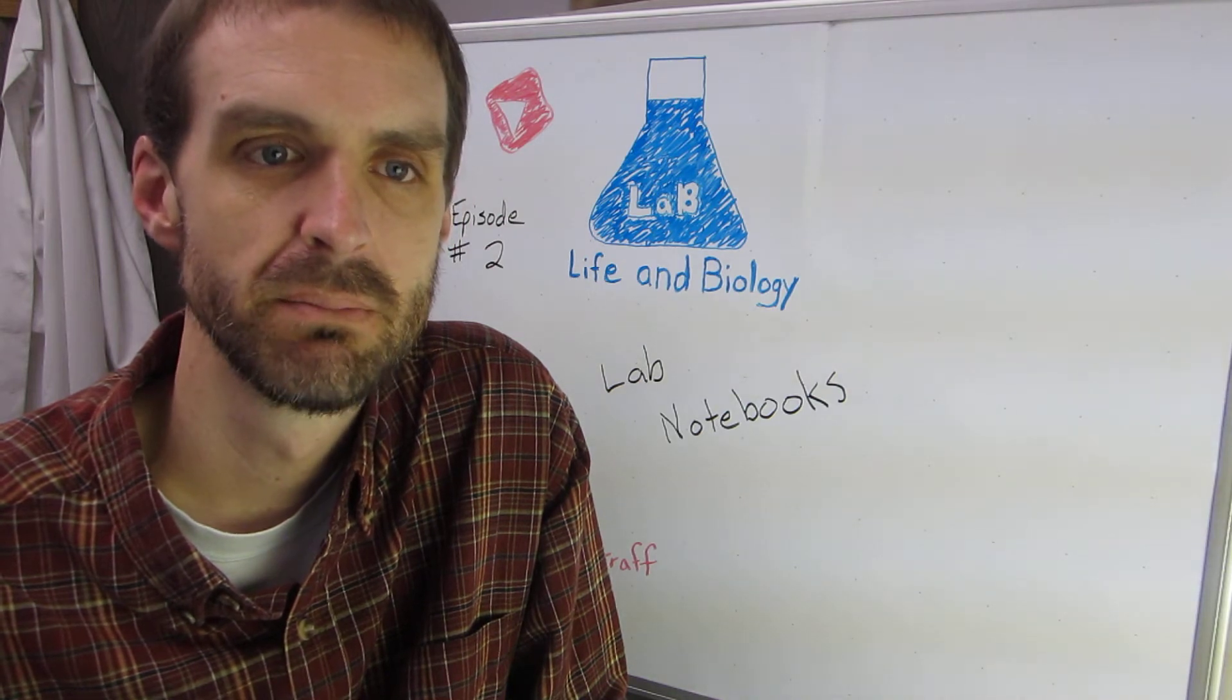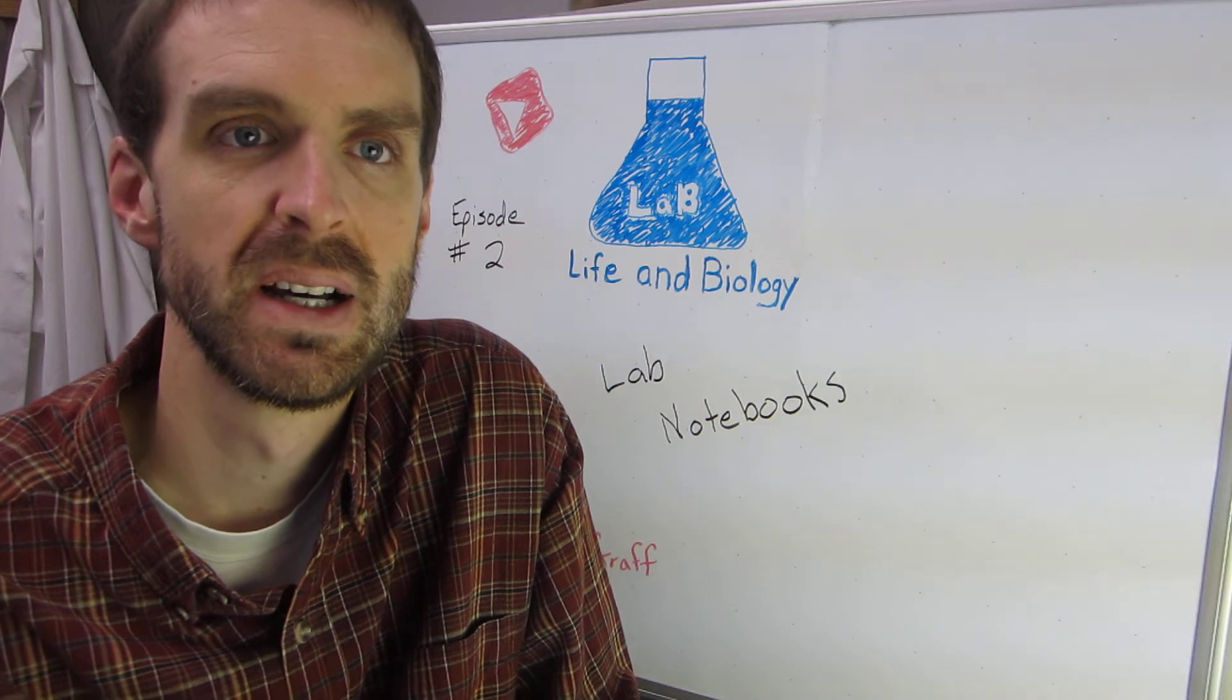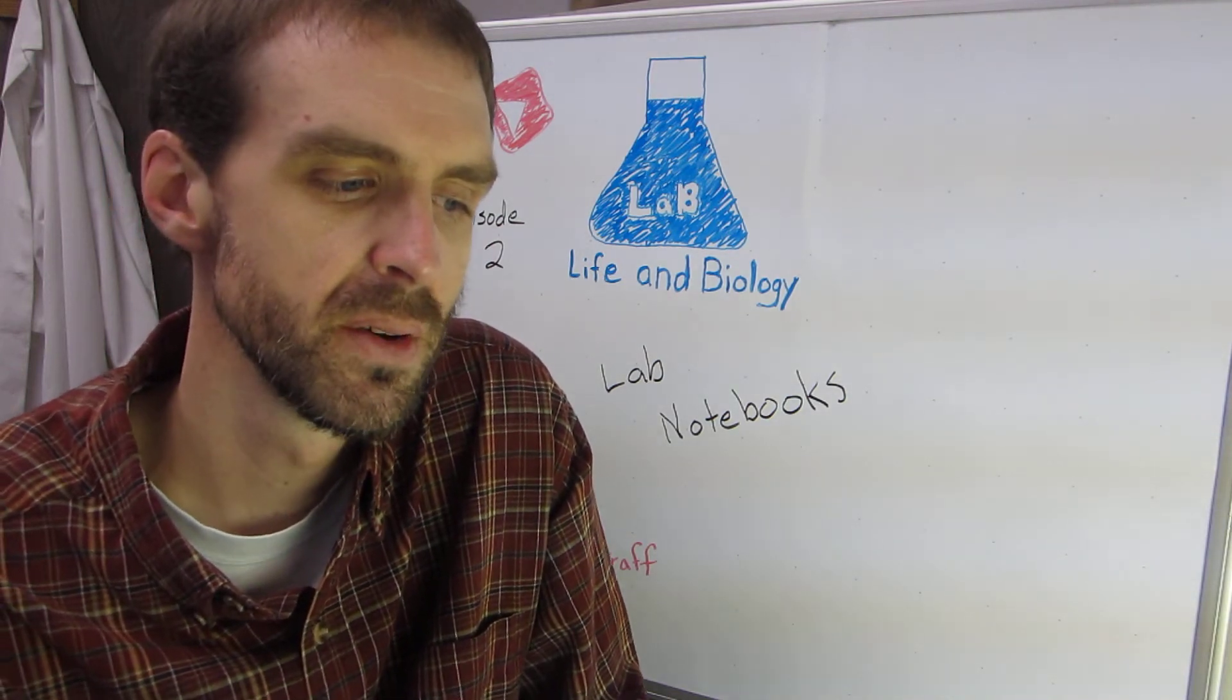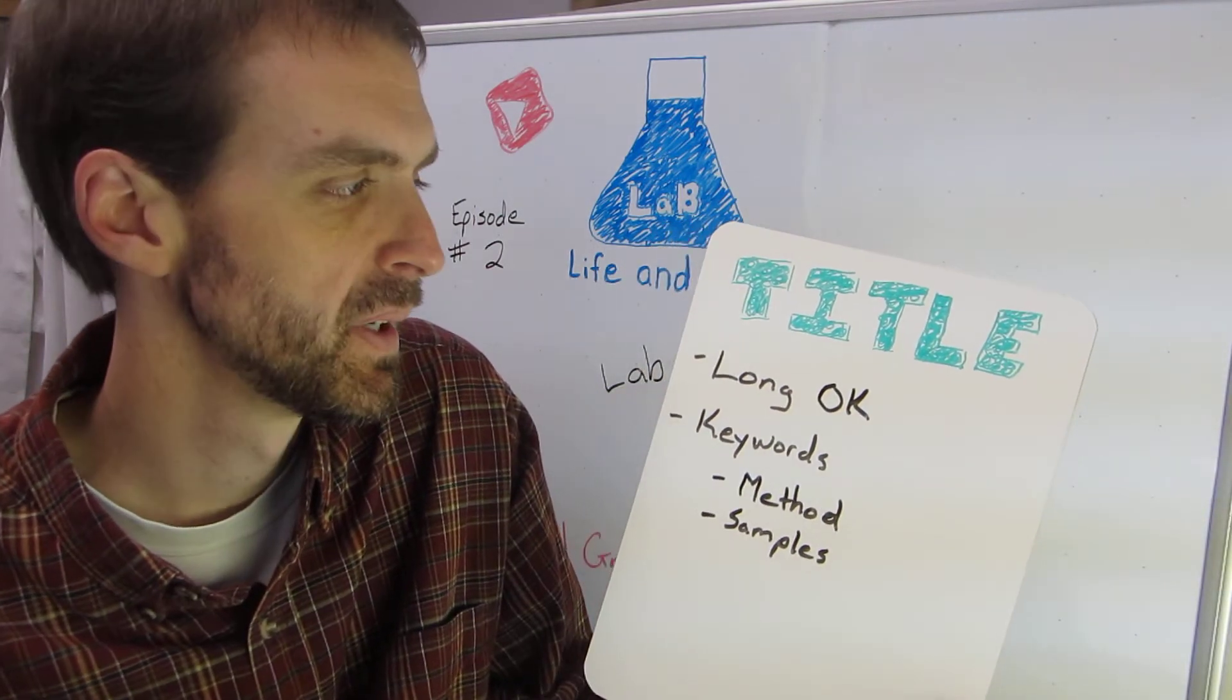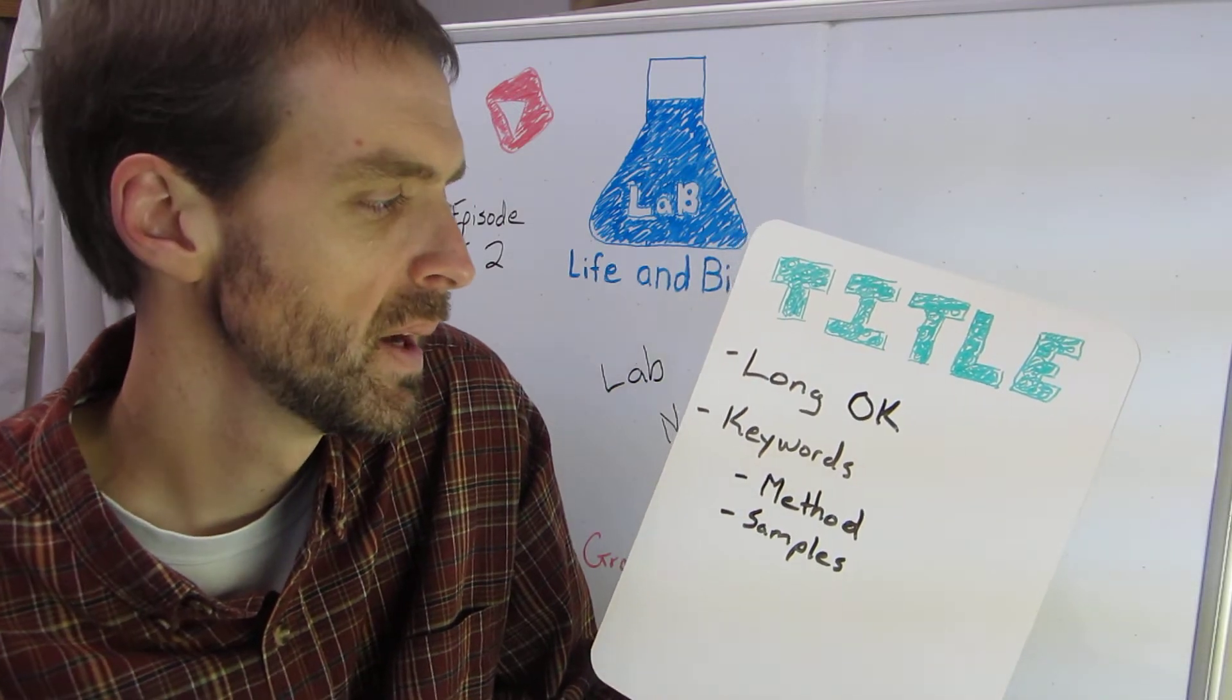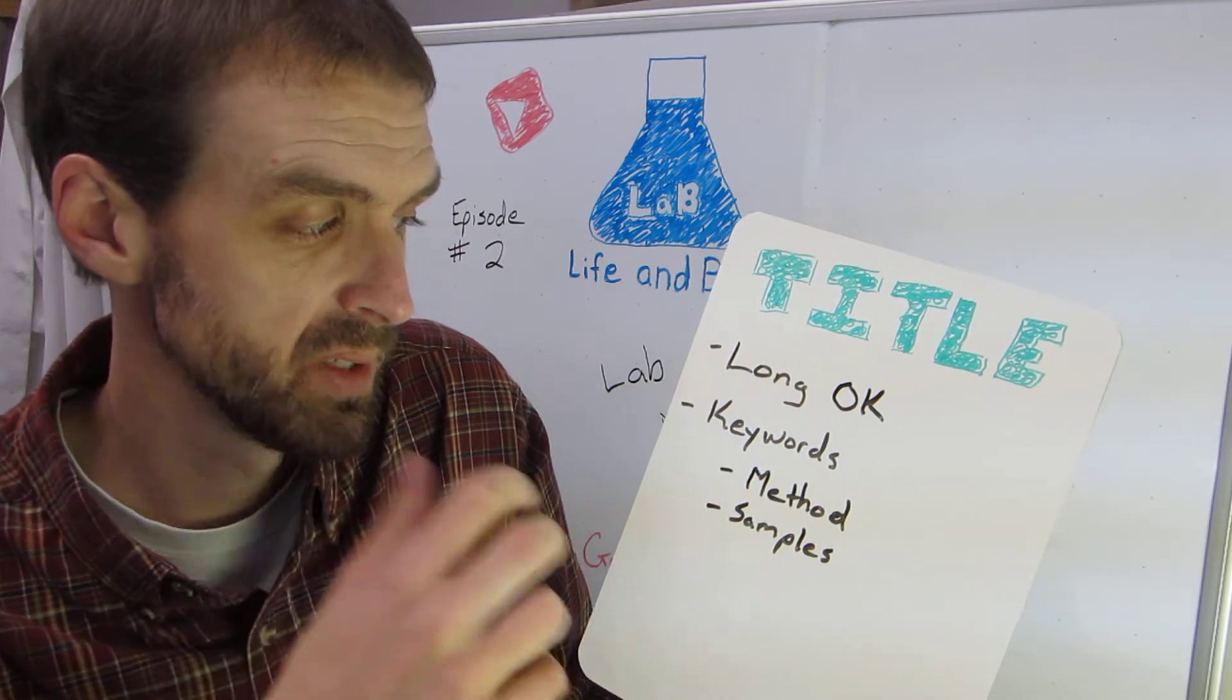So I want to talk about good lab book practices. In a lab book, you write an entry for each experiment that you do. So for each experiment, there's obviously going to be a title for that experiment. And personally, I think that a long title is okay. And what I really want in that title is keywords.